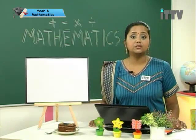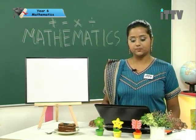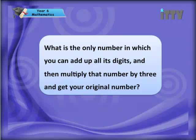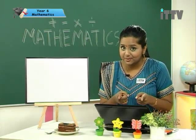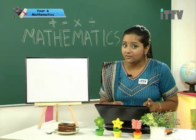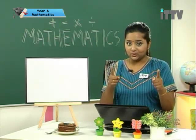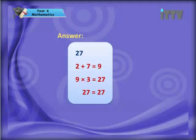Let's go to the question from last lesson's brain teaser. What is the only number where you can add up all its digits, multiply that number by three, and get back the original number? The hint was the three times table. The answer is 27. Two plus seven is nine, and nine times three is 27. 27 equals 27. Simple and easy.